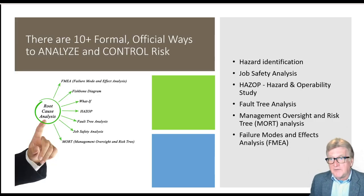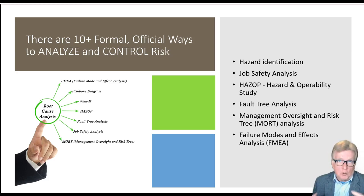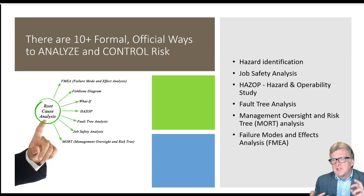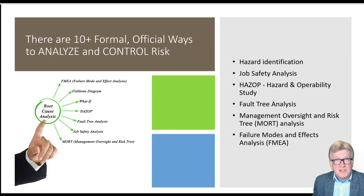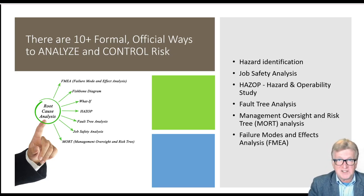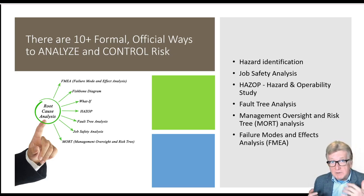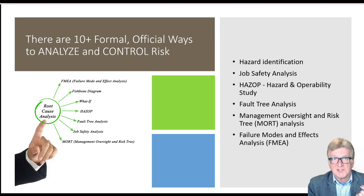What is failure modes and effects analysis? It's a method used in systems safety — a safety management tool. There are at least 10 formal official ways to analyze and control risk: hazard identification, job safety analysis (also called job hazard analysis), HAZOP which is used in the chemical industry, fault tree analysis, and others including FMEA at the end of the list. I chose FMEA because it is broadly generalizable across all of the sectors BSE works in — food and bioprocessing, natural resources and the environment, and machinery systems. It can be applied to any type of risky process or product.